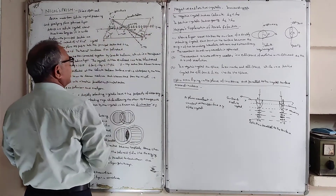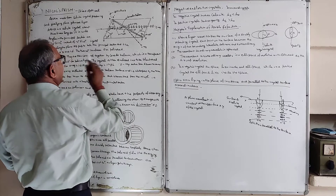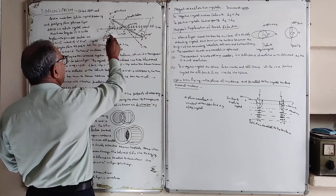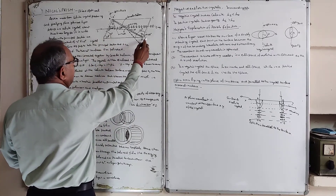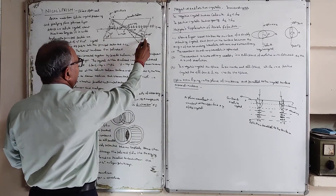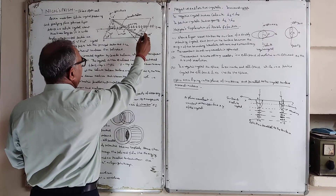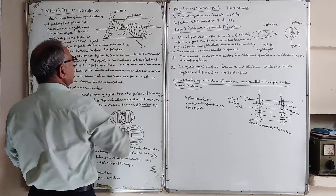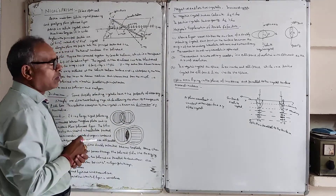This is the Nicol Prism, labeled ABCD. The angle at one end is 71 degrees and the other angle is 109 degrees.